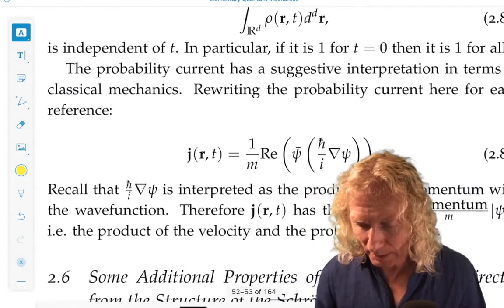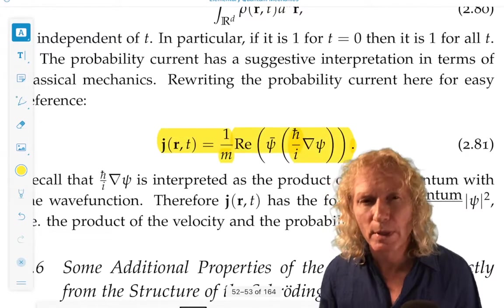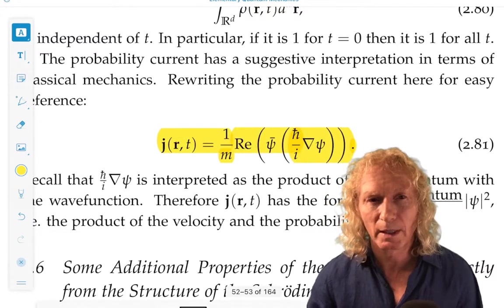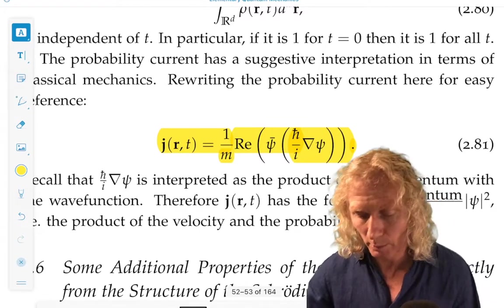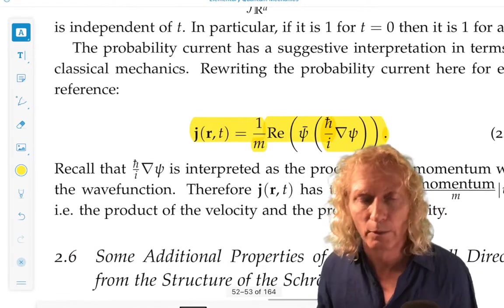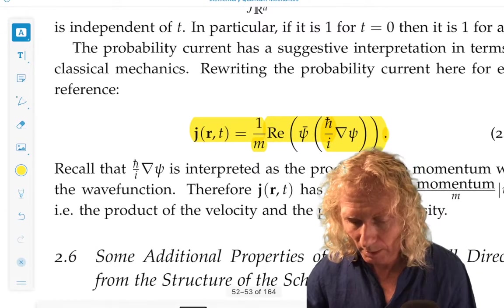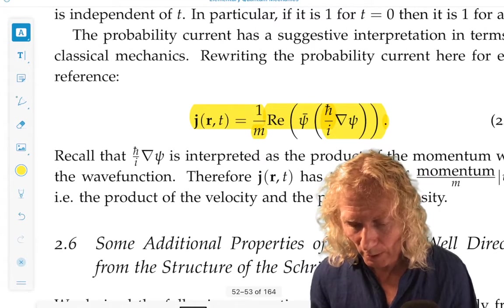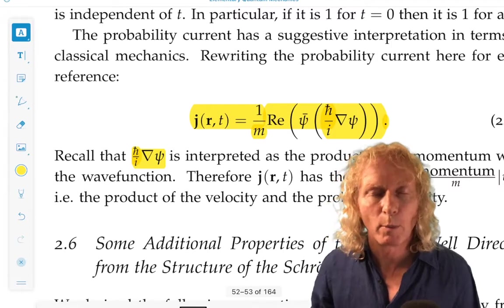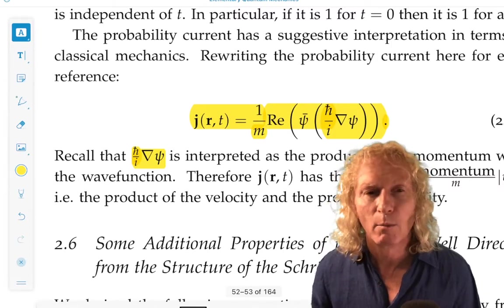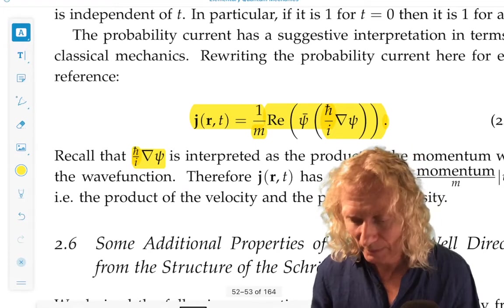Now, let's look at the expression for the probability current a bit more closely. And we're going to see a nice analogy with classical mechanics and the fluid dynamical interpretation of the motion of probability density. So, ℏ/i ∇ψ, we can think of that as the product of momentum times ψ. Momentum in its operator form is ℏ/i grad. This is an analogy.